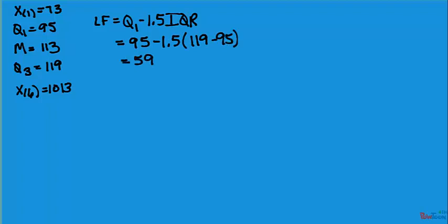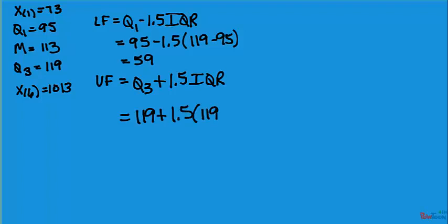The upper fence is Q3 plus 1.5 IQR. In this case, that's 119 plus 1.5 times 119 minus 95. That is 155.